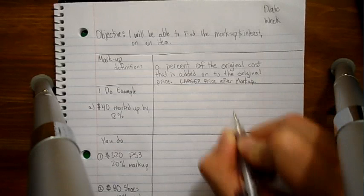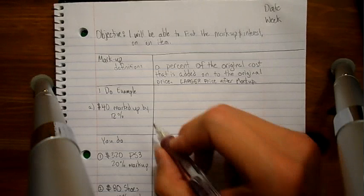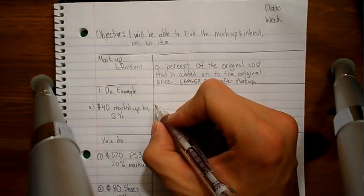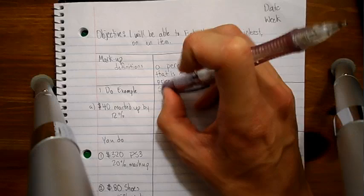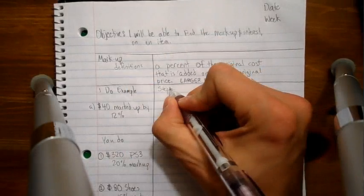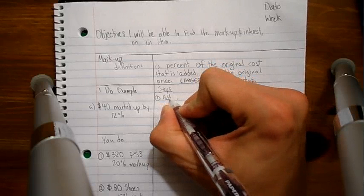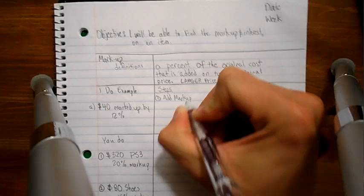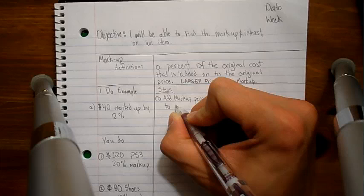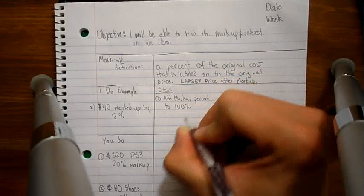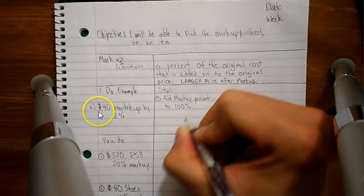So, we're going to see me do an example and then I'm going to work out one of the you do's with you. And I'm going to leave you to do you do example number two. But first, we've got to get some steps. So, here are some steps to remember and to keep us organized as we're finding the markup and interest on an item. Step the first. We've got to add the markup percent to 100. All right. I know what you're thinking.